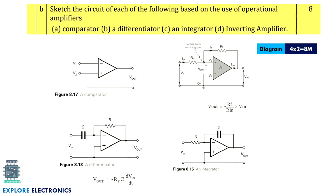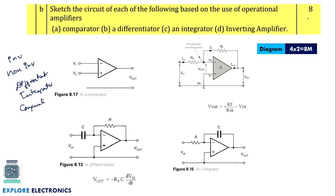Then: sketch the circuit of each of the following based on operational amplifiers — comparator, differentiator, integrator, and inverting amplifier. There may also be a chance of asking the non-inverting amplifier. These are very important op-amp circuits. This question is for eight marks; just sketching the circuit is enough, but to get full marks we can also write the expressions for each circuit supportingly.